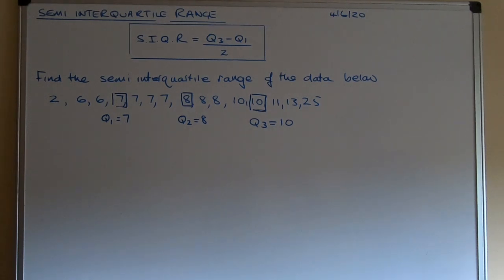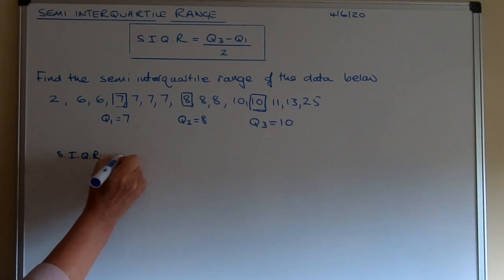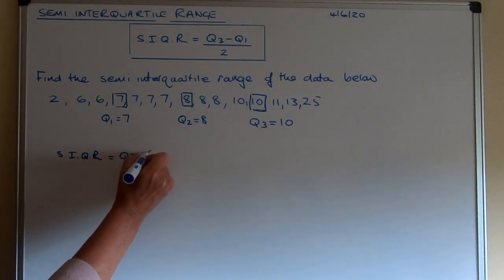So if you're asked to find the semi-interquartile range you need to use the formula that's on the board. Now that formula is not given in any formula sheet, you're expected to learn that. So you need to know the semi-interquartile range is Q3 minus Q1 over two. So we start by using that formula. Semi-interquartile range is equal to Q3 minus Q1 all over two.